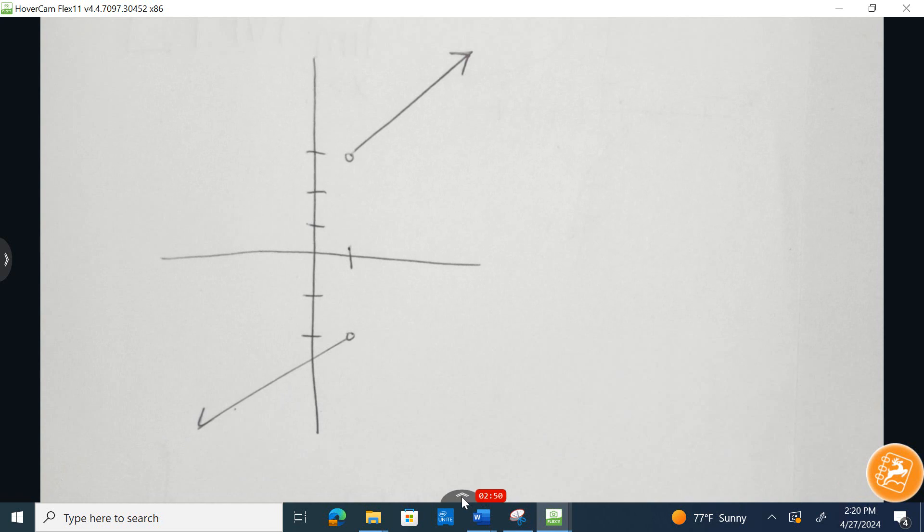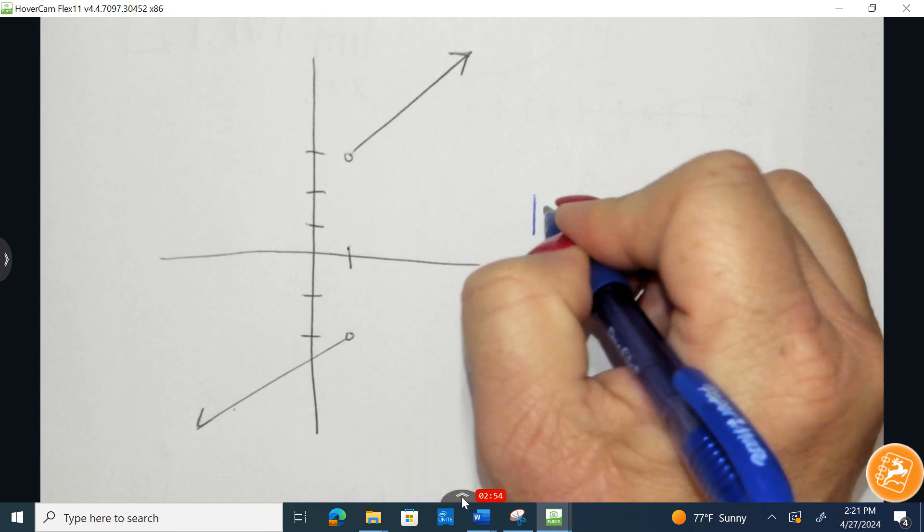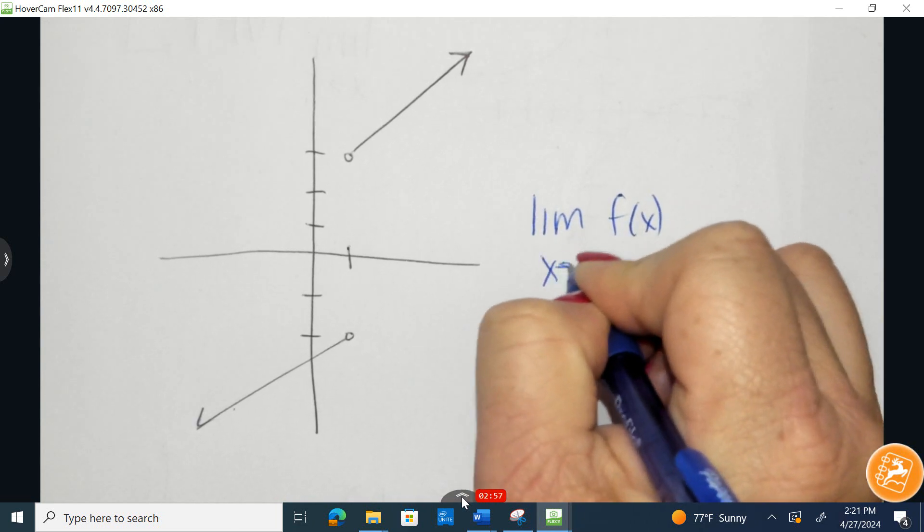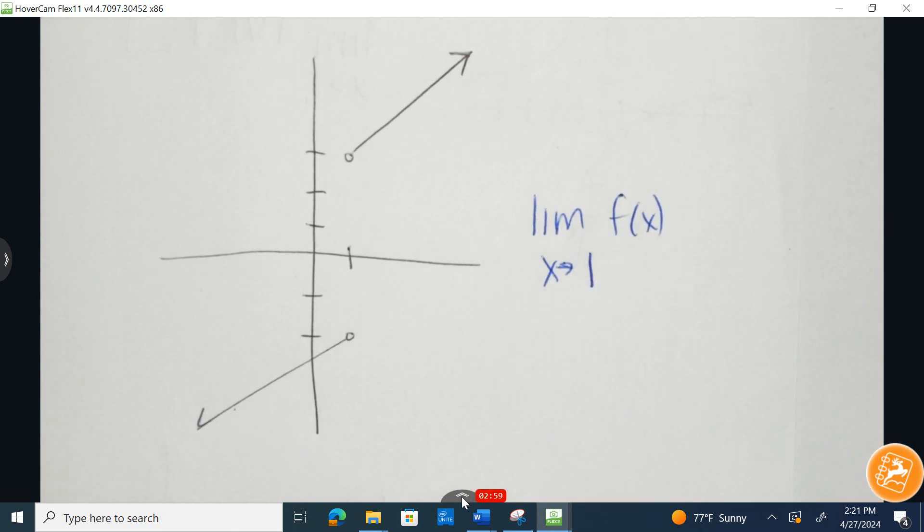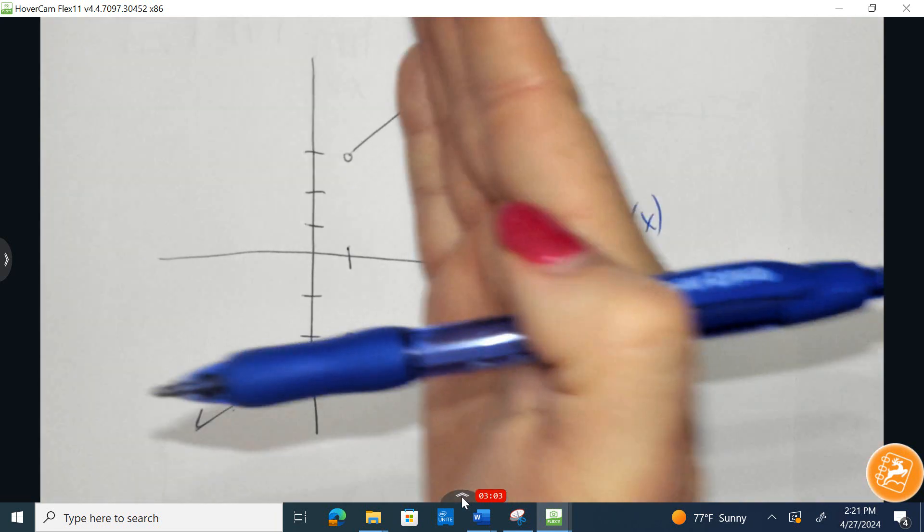I gave you this unique piecewise function, and we're going to call this function f of x, and I said the limit of f of x as x approaches 1. Now, if I said from the right-hand side, from the right-hand side, so coming in from the right,